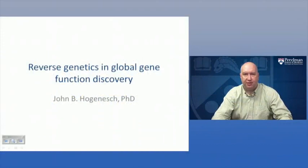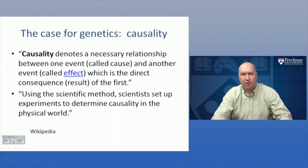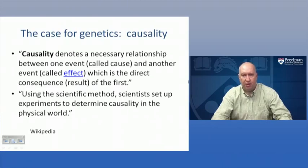Today we're going to talk about reverse genetics and global gene function discovery. Here's the roughly stated case for genetics - establishing causality. Causality denotes a necessary relationship between one event, the cause, and another event, the effect, which is the direct consequence of the cause. Using the scientific method, scientists set up experiments to determine causality in the physical world. That is pretty much what we're doing with a lot of genetics.